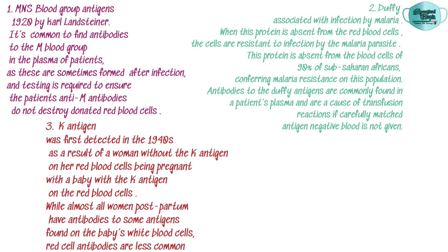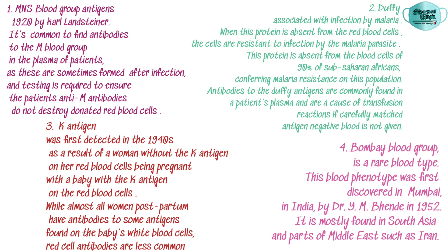The K antigen was first detected in the 1940s as a result of a woman without the K antigen on her red blood cells being pregnant with a baby who had the K antigen. The Bombay blood group is a rare blood type, first discovered in Mumbai, India by Dr. Y.M. Bhende in 1952, and is mostly found in South Asia and parts of the Middle East such as Iran.